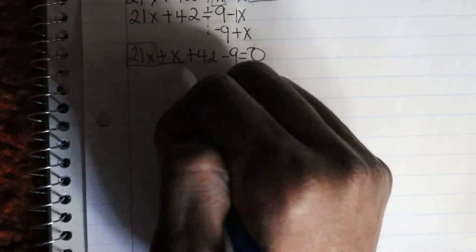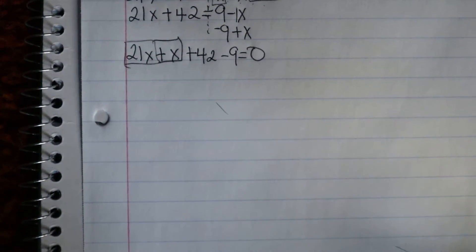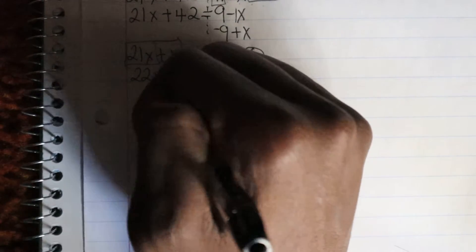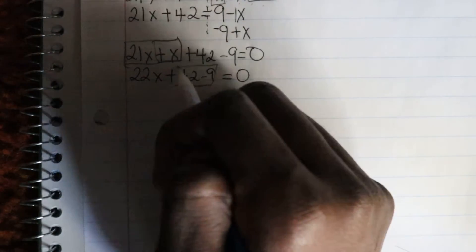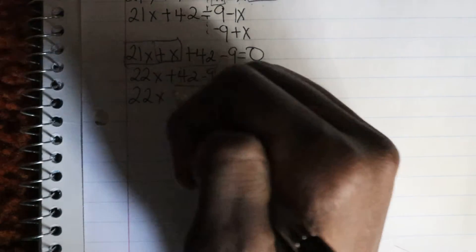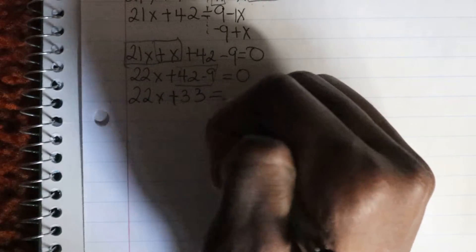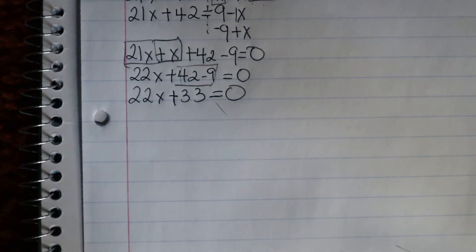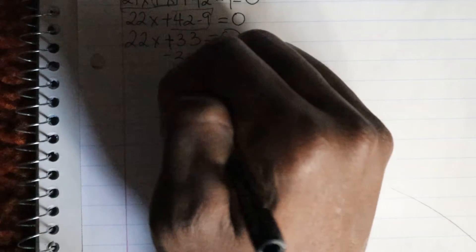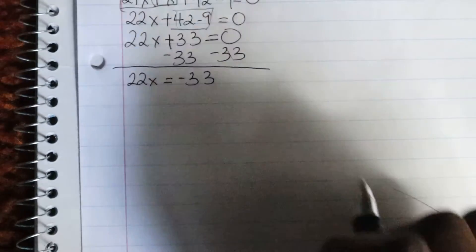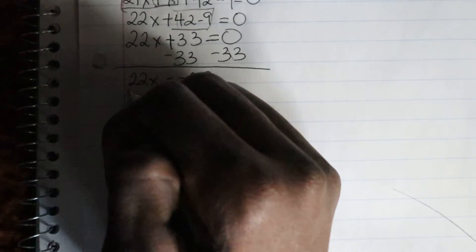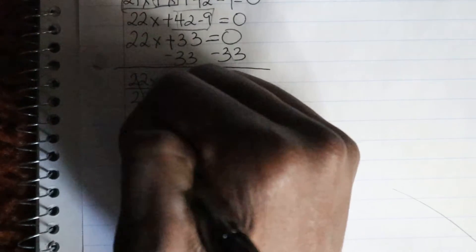So we'll add the like terms — the x's right there. When we add those two together, you get 22x plus 42 minus 9 equals 0. And then we have 42 minus 9. If you do the math, you get 22x plus 33, which equals 0. So now that we have that situated, our goal is to solve for x. In order to do that, we're going to subtract the 33 on both sides. So you have 22x, which equals negative 33.